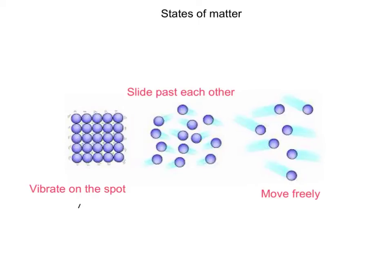In this video we're going to talk about states of matter. That basically means that different matter, which is anything that has mass, can be found in different states. All of these circles are matter, or particles, and you can see there are three different states of matter you need to know.